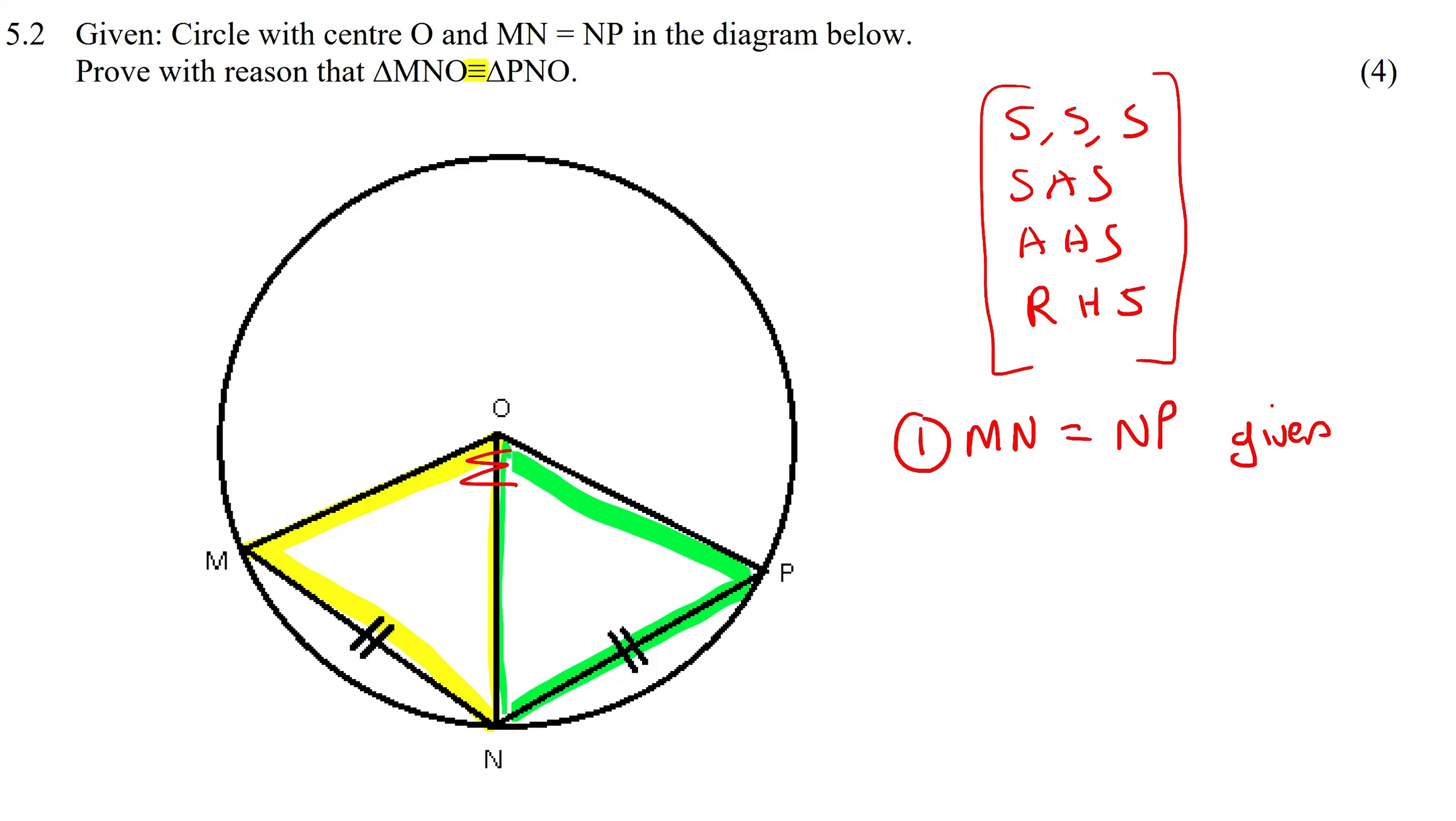The next one, can you see that these two would have, this would have to be the same for both, because both triangles are using that side. So we would say that ON is equal to ON, and that is because of common.